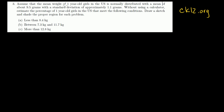Assume that the mean weight of one-year-old girls in the US is normally distributed with a mean of about 9.5 grams — that's got to be kilograms. I have a 10-month-old son and he weighs about 20 pounds, which is about 9 kilograms, so 9.5 grams is nothing. This has got to be kilograms. So the mean is 9.5 kilograms and the standard deviation is approximately 1.1 kilograms.